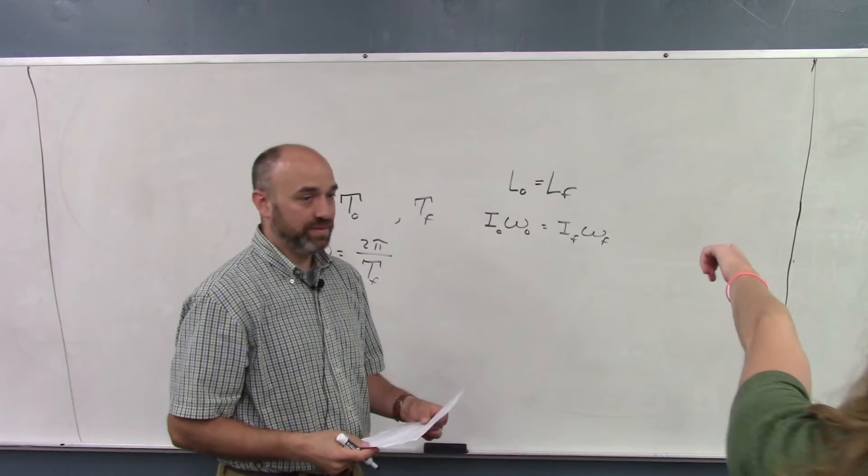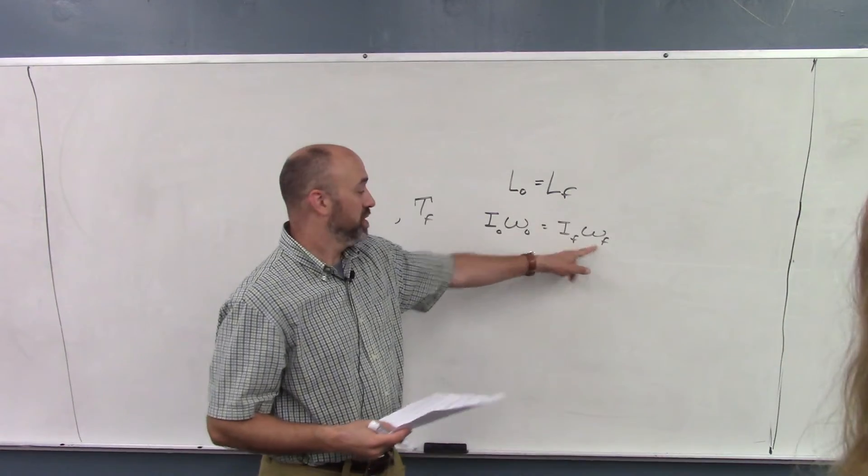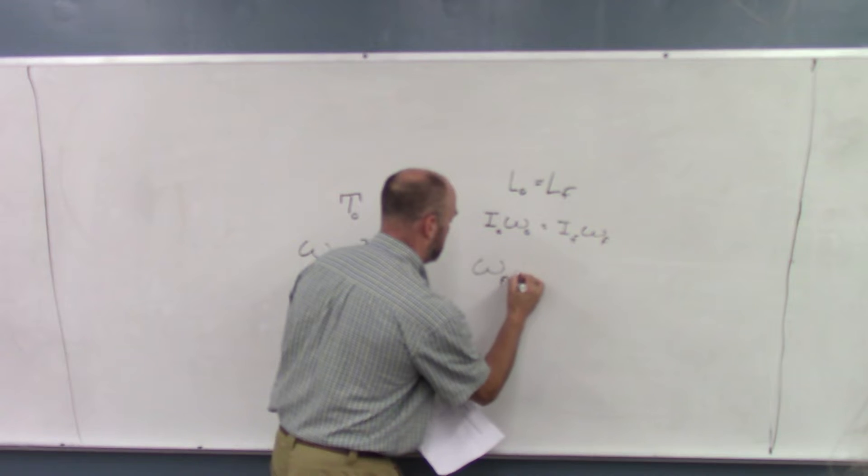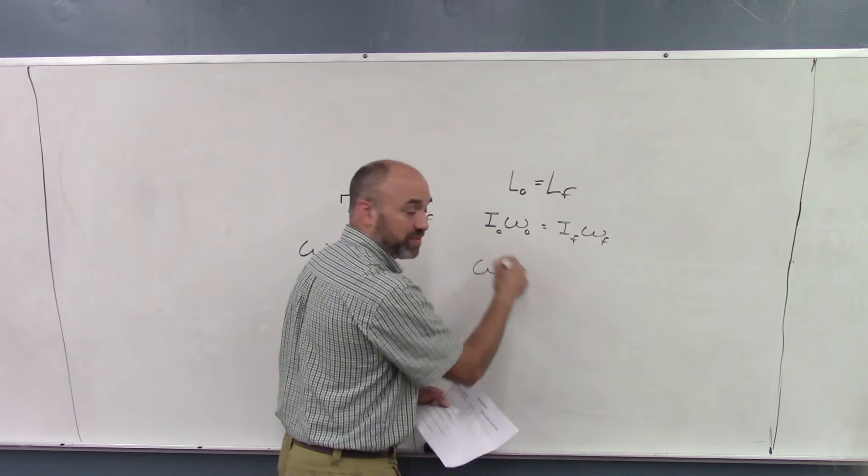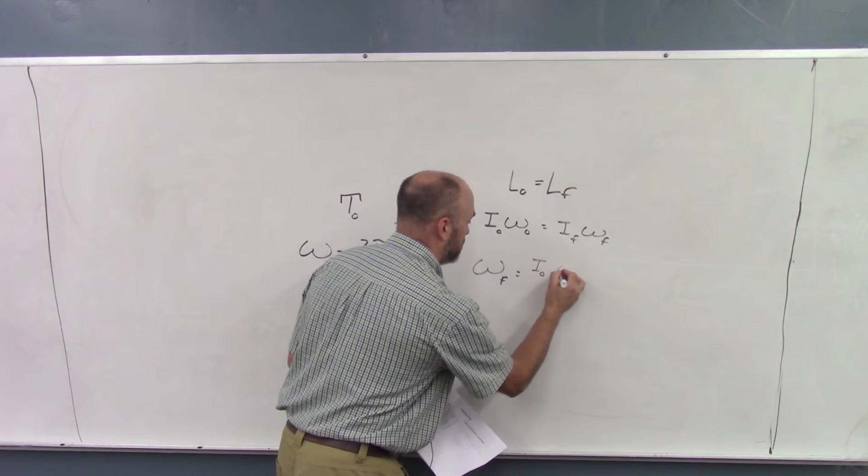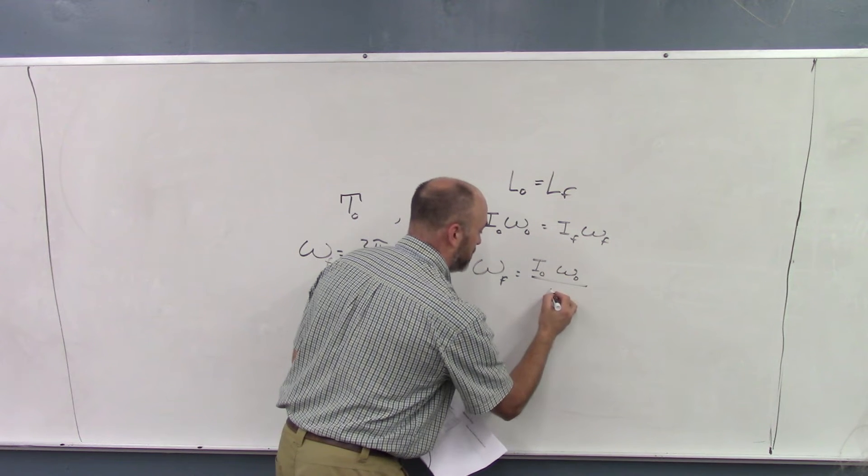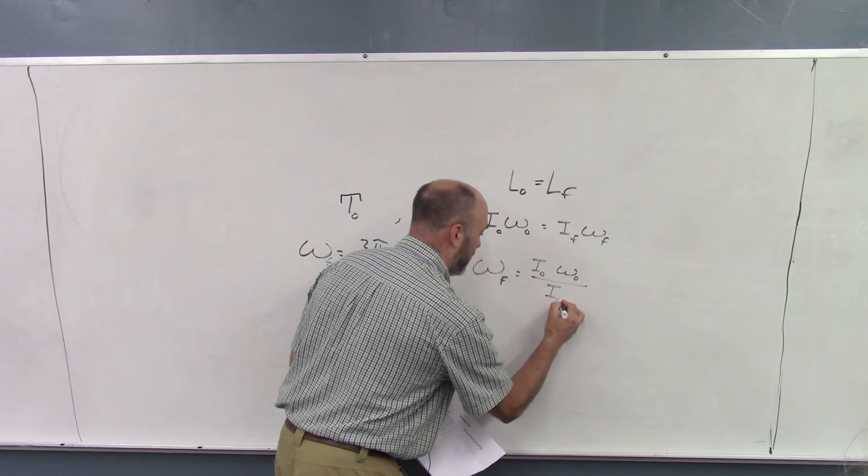And we're trying to find this. Okay. So we'll solve this, just divide that I downstairs. So we'll have I initial times Omega initial over I final.